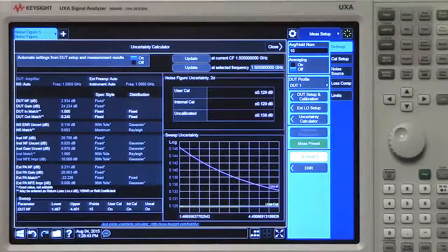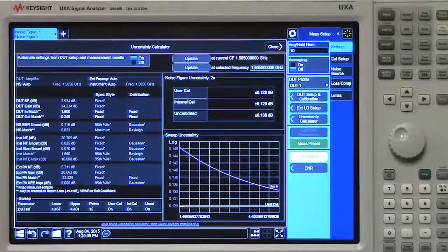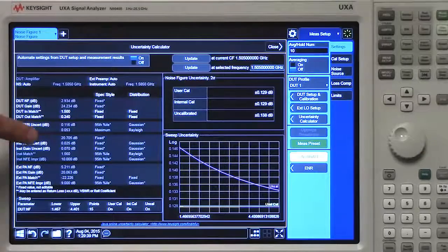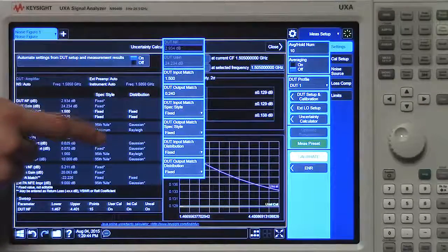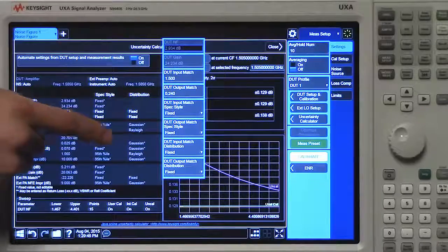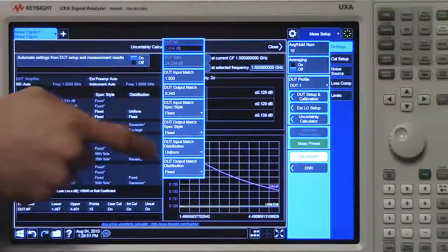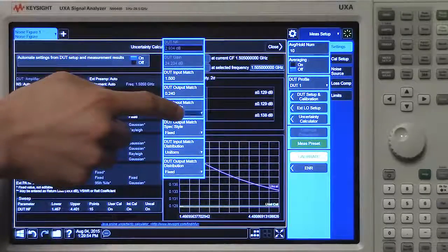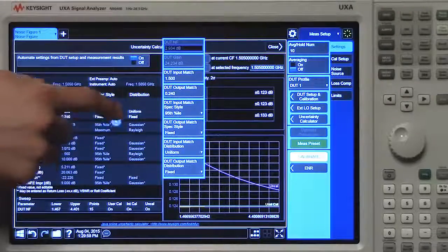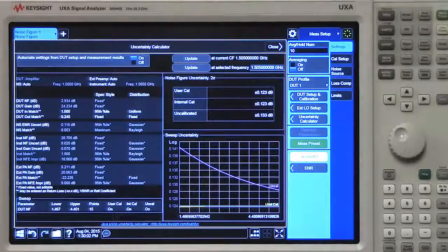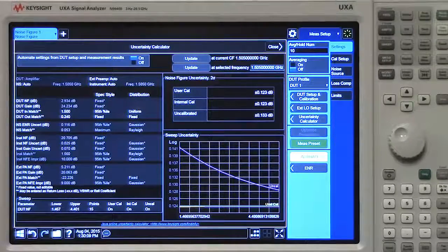Our competition, on the other hand, forces the user to manually enter these values. Also notice we give you full control over the distributions that model your DUT's input and output matches. We could change our input match distribution to a uniform distribution that is specced according to the 95th percentile, for instance. Now our uncertainty calculator has more information to go off of. This will give you a more accurate estimation of the measurement uncertainty.